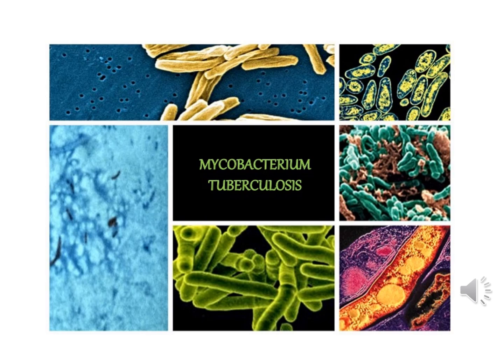Mycobacterium tuberculosis is a species of pathogenic bacteria in the family Mycobacteriaceae and the causative agent of tuberculosis. It has an unusual waxy coating on its cell surface primarily due to mycolic acid, which makes the cell impervious to Gram staining — as a result, M. tuberculosis can appear either gram-negative or gram-positive. Therefore, acid-fast stains such as Ziehl-Neelsen are used instead to identify M. tuberculosis under a microscope.